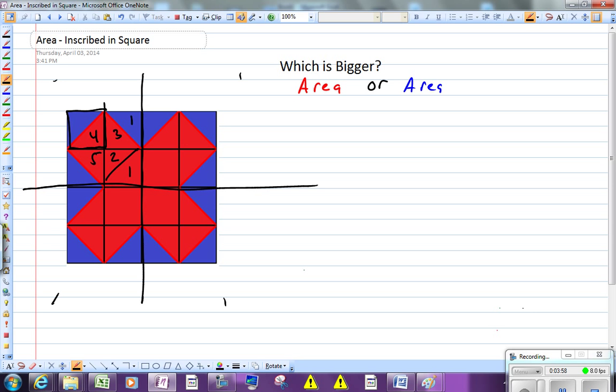And for the blue, there's 1, 2, 3 of them. So I can see very quickly, yes, the red does have more area than the blue.